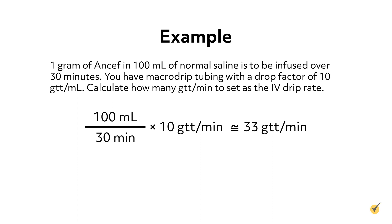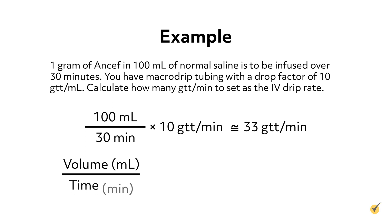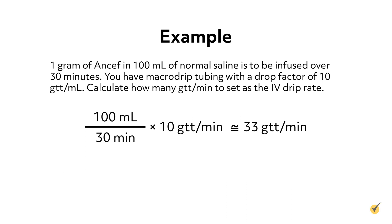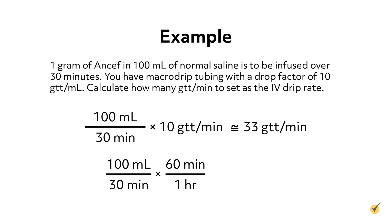If you need to set this up on an IV infusion pump, use the formula: volume in milliliters divided by time in minutes, multiplied by 60 minutes per hour. This equals the IV flow rate in milliliters per hour, which is the standard method of setting infusion rates on IV pumps. Using this formula: 100 milliliters divided by 30 minutes, times 60 minutes in one hour, equals 199.9, rounded to 200 milliliters per hour.